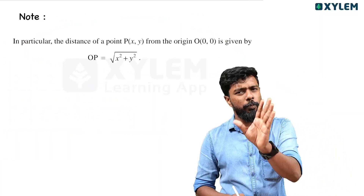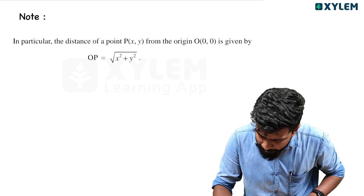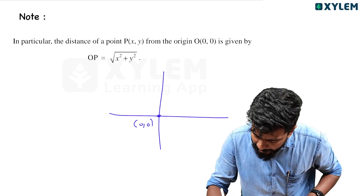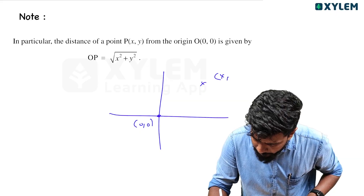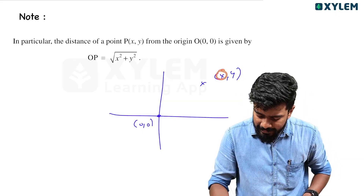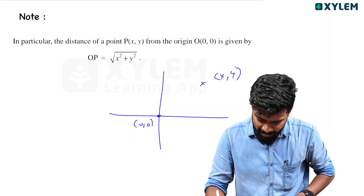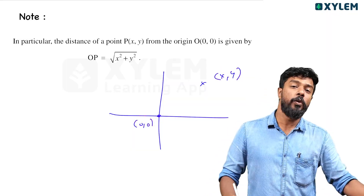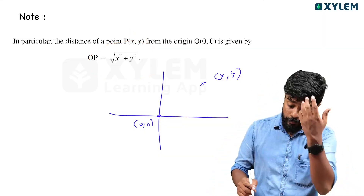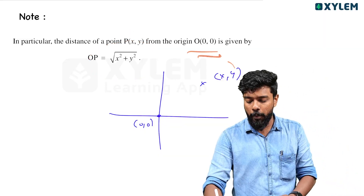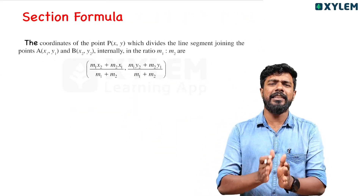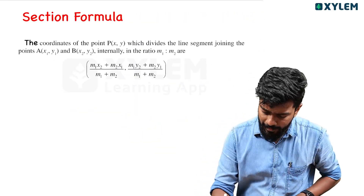An important note: the distance between two points where one point is the origin (0, 0) and the other point is (x, y) simplifies the formula. x minus 0 whole square is x², and y minus 0 whole square is y². So the distance from the origin to point (x, y) is simply √(x² + y²).